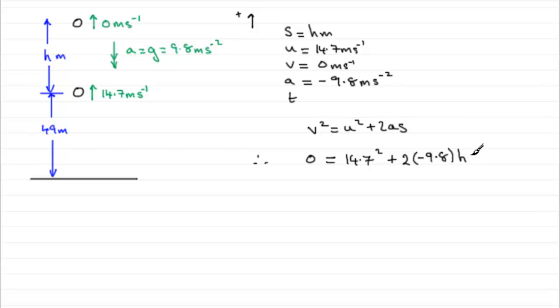So all we need to do is just rearrange this equation. If we add this term to both sides because it is negative, then we would have 2 times 9.8 which is 19.6, so if you add it to both sides you're going to get 19.6h equals 14.7 squared. 14.7 squared in fact is 216.09. And all we need to do is divide both sides by 19.6 and you'll end up with h equaling 11.025 metres.